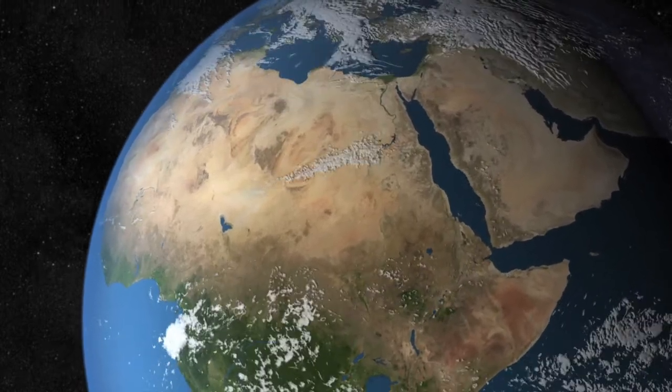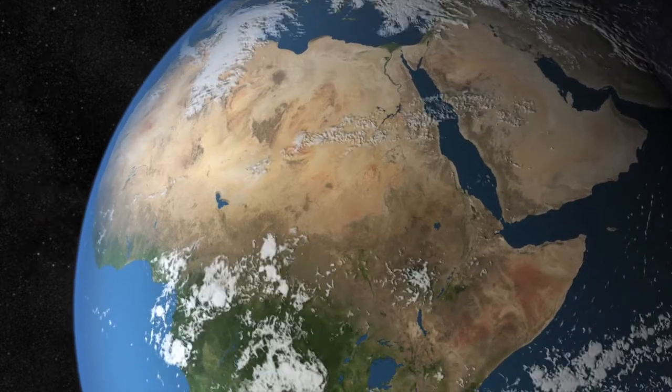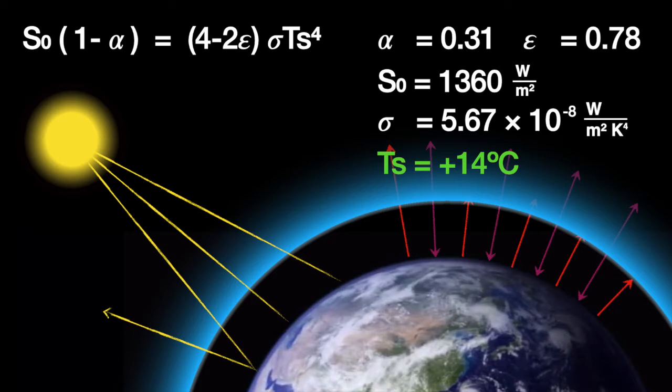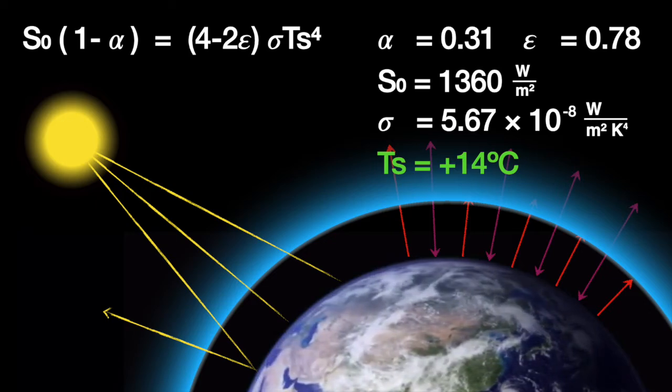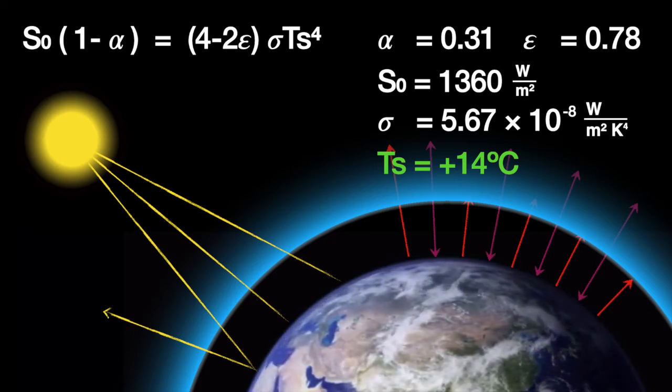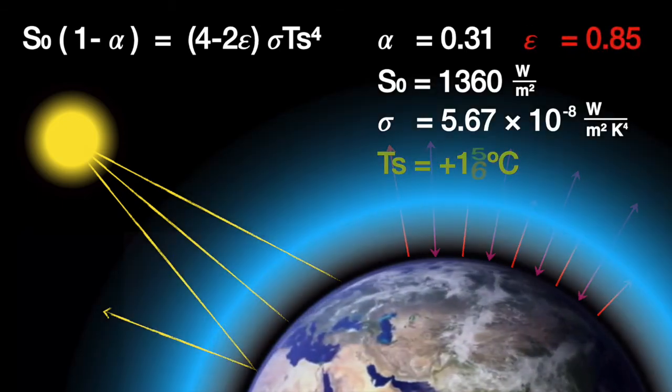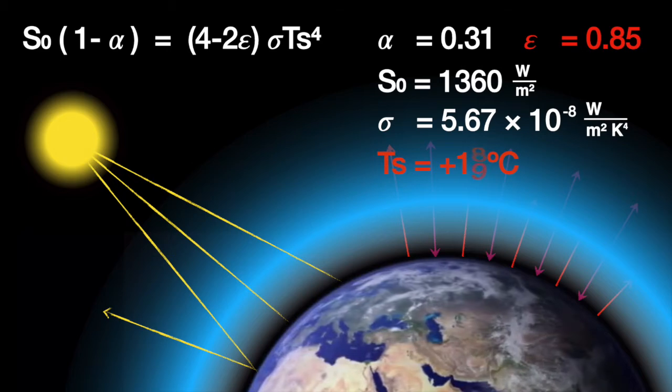But you don't always need all of that complexity to answer basic questions. The single-layer model of the atmosphere that I just showed you is already good enough to show that it doesn't take much of a change in emissivity for surface temperatures to build up by 5 or 6 degrees.